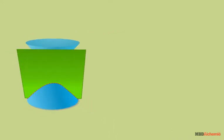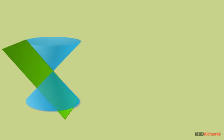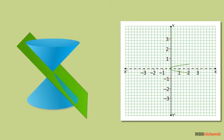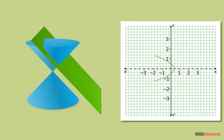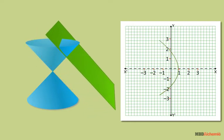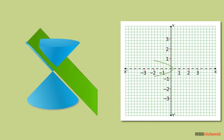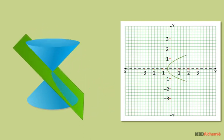Now, keeping the cutting angle constant, equal to alpha the semi-vertical angle, we start moving the plane upwards. We can see as the plane gets closer to the vertex, the parabola gets thinner, and as it moves away from the vertex, the parabola gets wider.